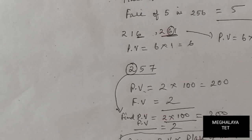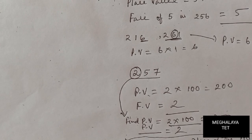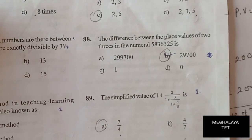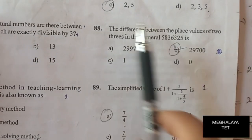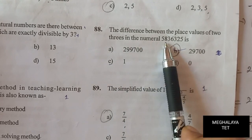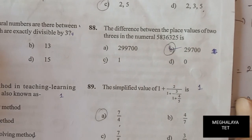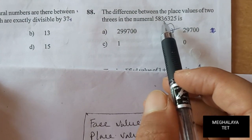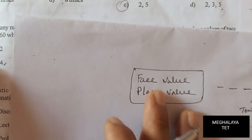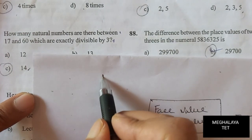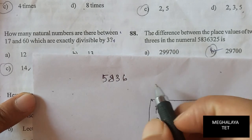Now let's do a question that came in a previous exam. We have to find the difference between the place values of the two 3s in the numeral 583,6325. Let me write the number here: 5, 8, 3, 6, 3, 2, 5.